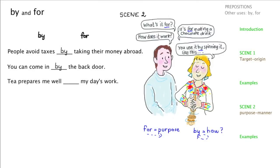And here's the next sentence: Tea prepares me, my day's work. What's the purpose of the tea? To prepare me. So it'll be four. So I'll just grab the four and pull it down there, there we go.